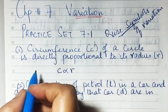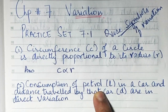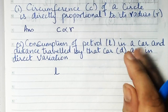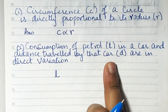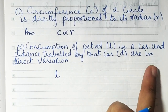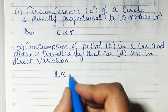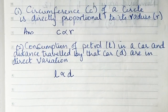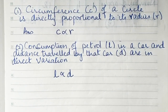The next part: the consumption of petrol L in a car and the distance traveled by that car D are in direct proportion. So L is directly proportional to D. You just have to write it in symbol form. That's it. Now let's go to sum number 2.